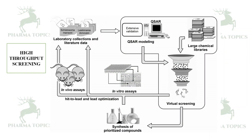In high throughput screening, you first select the ligand data from the literature or by combinatorial synthesis to produce a larger set of compounds. These can parallelly go for QSAR studies, or you may use direct libraries, then go for virtual screening, followed by in vitro assays and then in vivo assays in animals from low to high phylogenetic order. This gives an idea about which compounds have good biological activity, allowing you to prioritize those with the desired activity.